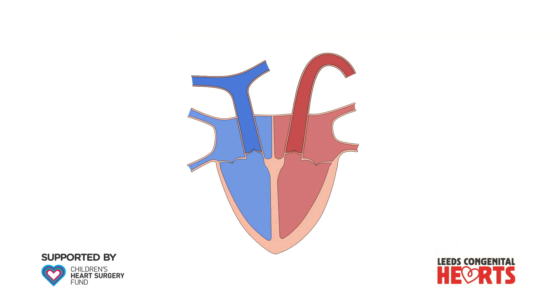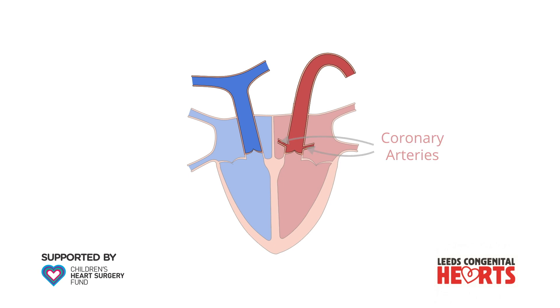Shortly after the aorta leaves the heart, it gives off two branches, the coronary arteries, that supply the heart itself with blood.